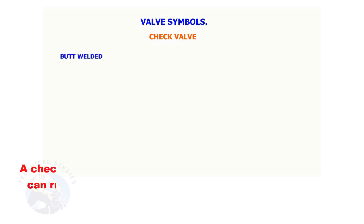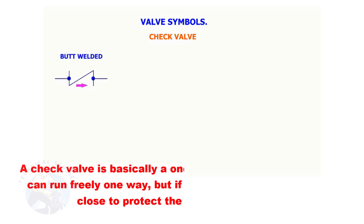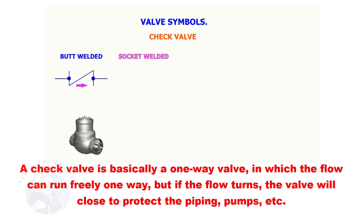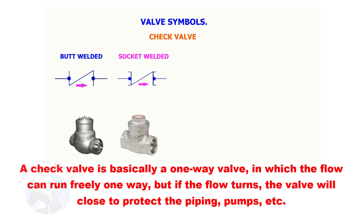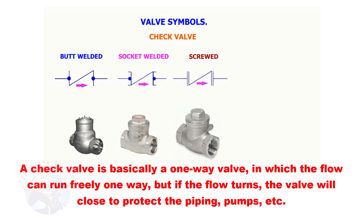A check valve is basically a one-way valve in which the flow can run freely one way, but if the flow turns, the valve will close to protect the piping, pumps, etc.